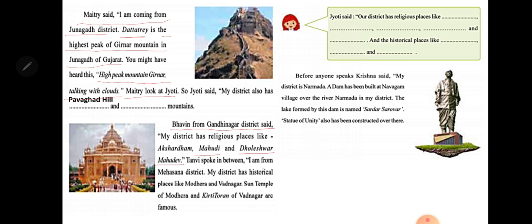Tanviv spoke and said: I am from Mahesana district. My district has historical places like Modhera and Vadnagar. The Sun Temple of Modhera is very famous in India, and the Kirti Torana of Vadnagar are also very famous.